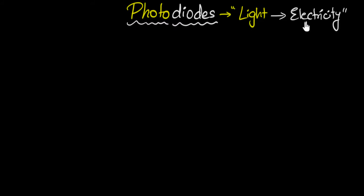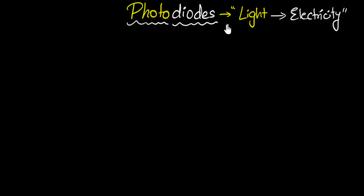When you hear about light being converted to electricity, the first thing that comes to mind is solar panels. Photodiodes are definitely used in solar panels, but those are specifically called solar cells, and we'll talk about them in a future video.